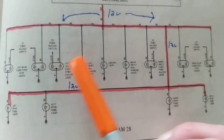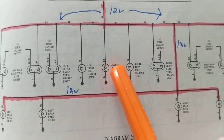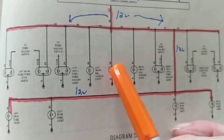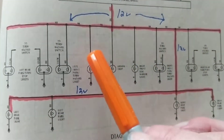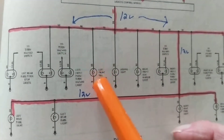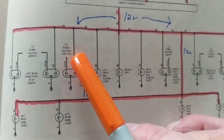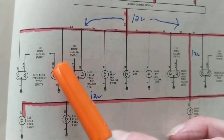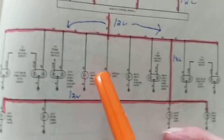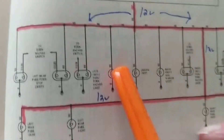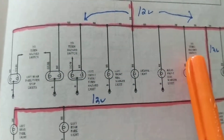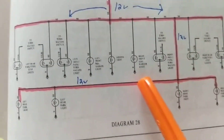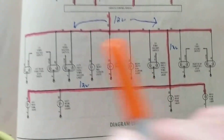If you would put these in a series circuit, that means this would be connected to this one, then this connected to this one. That means if one is out, all the bulbs will be out. We don't want that, obviously. So equal voltage across each one — that's number one.